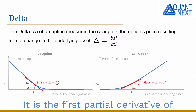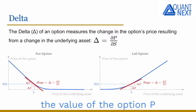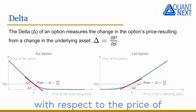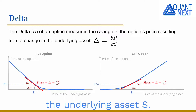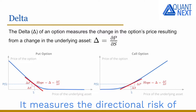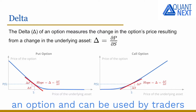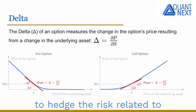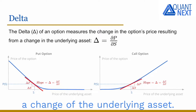Delta is the first partial derivative of the value of the option P with respect to the price of the underlying asset S. It measures the directional risk of an option and can be used by traders to hedge the risk related to a change of the underlying asset.